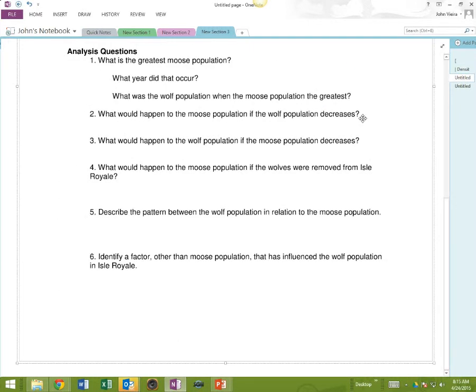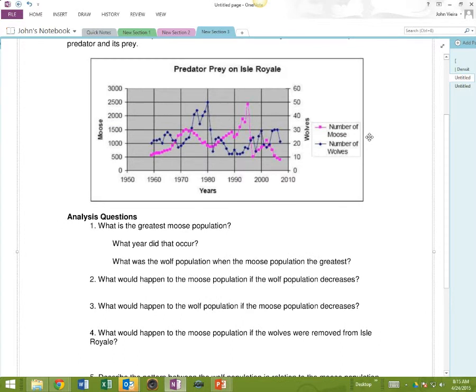Not to say that there were some density independent factors that would maintain that as well. So, let's look at this second to last graph. What's going on, what was the greatest moose population? What year did that occur, 1995 about? What was the wolf population at that time? The wolf population, was it high or low? At 1995? Yeah, it was pretty low, which would make sense, right?